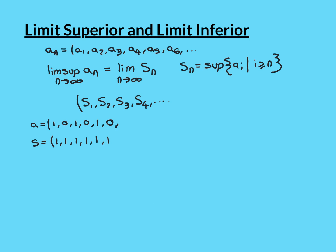To give a simple example, let's take the sequence that alternates between 1 and 0: 1, 0, 1, 0, 1, 0, continuing forever. If we construct its S sequence, the first entry S1 is the supremum of the set of all entries. That set is just {0, 1}, and the supremum of that set is 1. So S1 = 1.